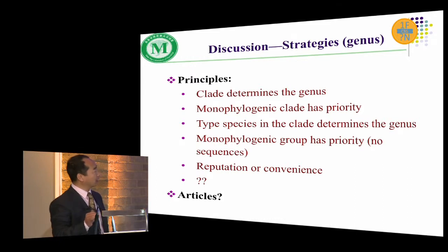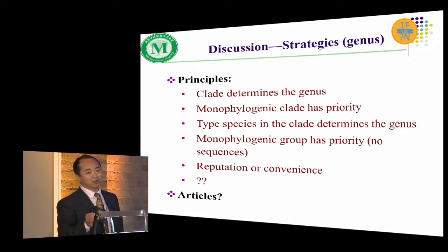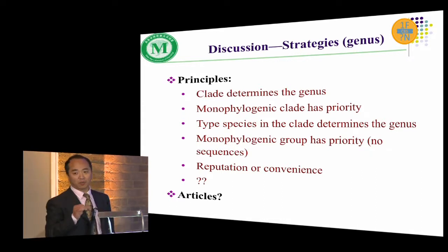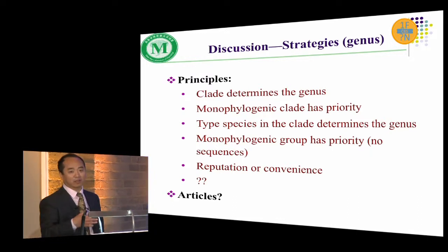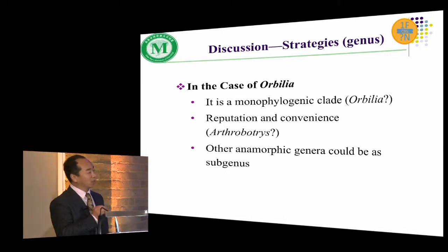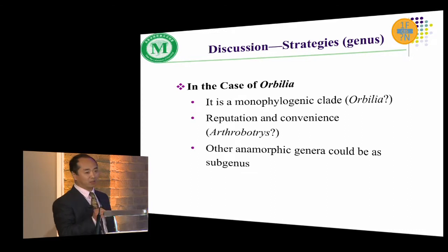The monophylogenetic clade has priority, the type species in the clade determines the genus name, and if there is no sequence available, monophylogenetic groups should have priority. Reputation and convenience may also be considered as rules for treating one fungus one name — perhaps like nomenclatural articles. For our fungi, there is a monophylogenetic clade for Orbilia, so Orbilia should be the genus name. But for reputation and convenience, Arthrobotrys is the oldest name, so probably we should choose Arthrobotrys as the genus name, not Orbilia, and other anamorphic genera should be treated as subgenera.